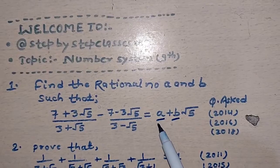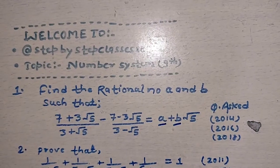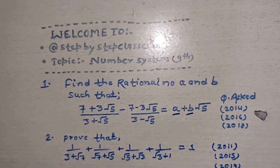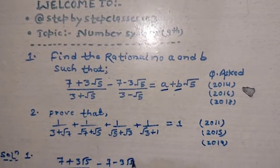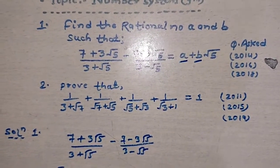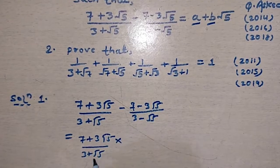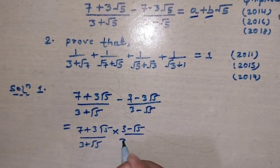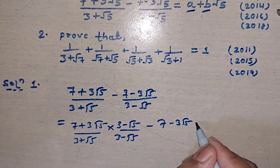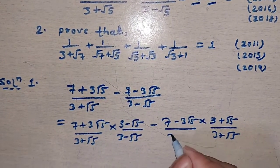This type of question belongs to rationalization. The first question is: (7 + 3√5) / (3 + √5) minus (7 - 3√5) / (3 - √5). We will solve this problem by the rationalization method. The denominator of the first fraction is 3 + √5, so we multiply by 3 - √5. For the second fraction, the denominator is 3 - √5 and we multiply by 3 + √5.